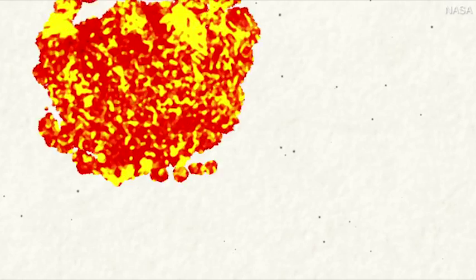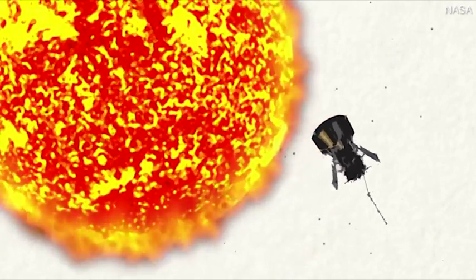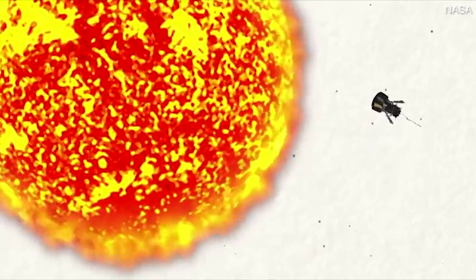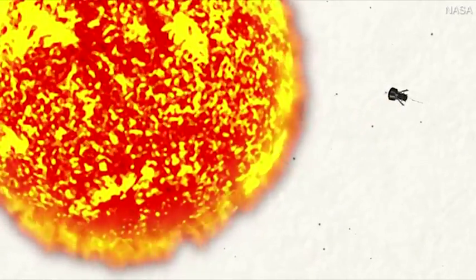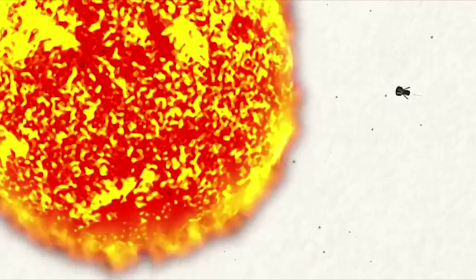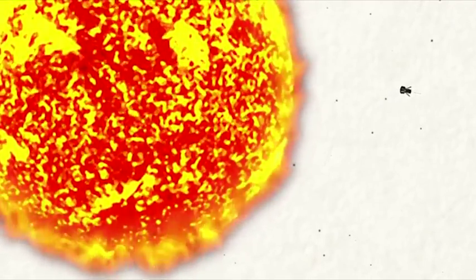NASA's Parker Solar Probe will soon fly closer to the Sun than any spacecraft before it, about 4 million miles from the visible surface. But getting that close to the Sun requires some fancy orbital mechanics.